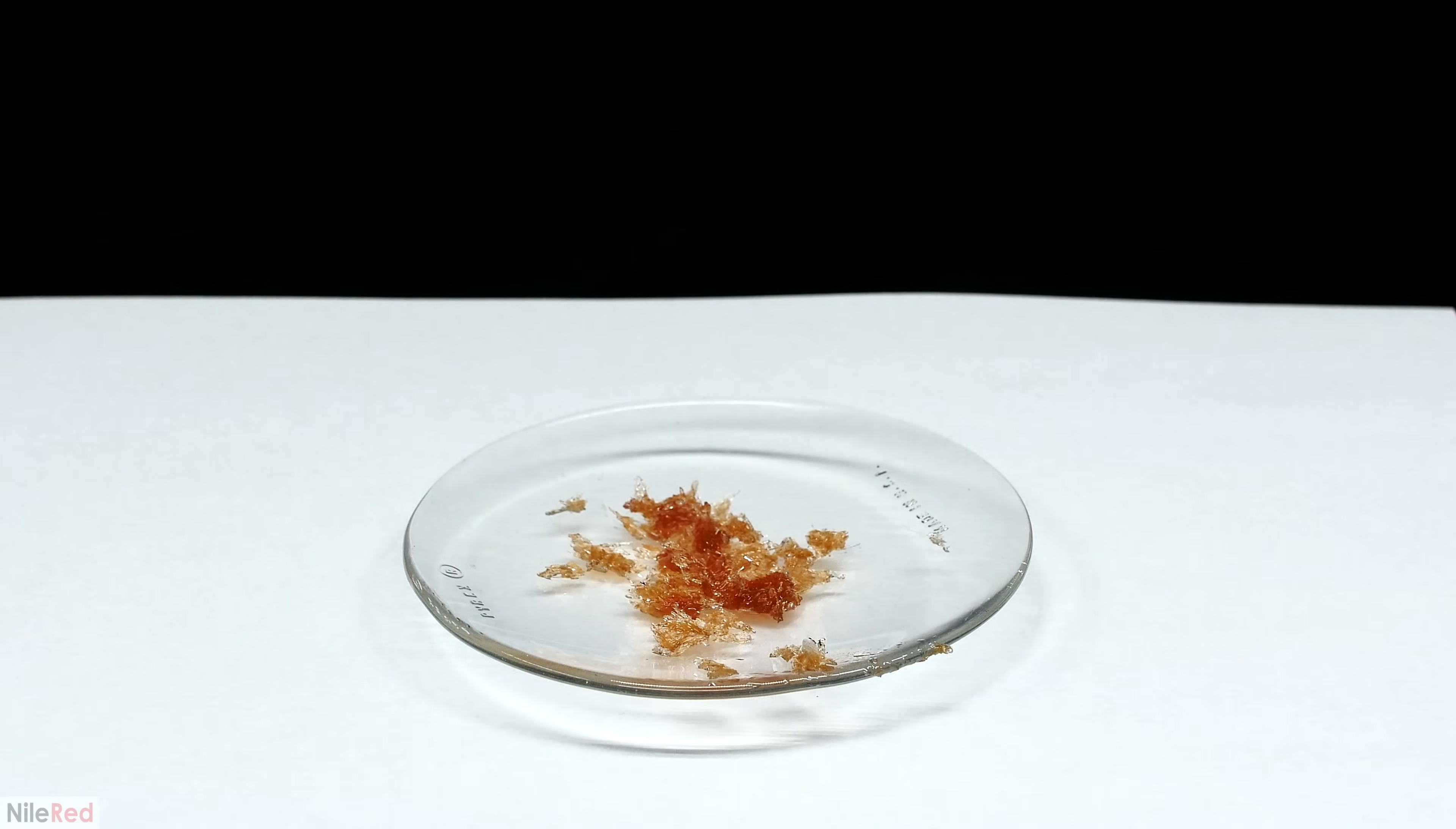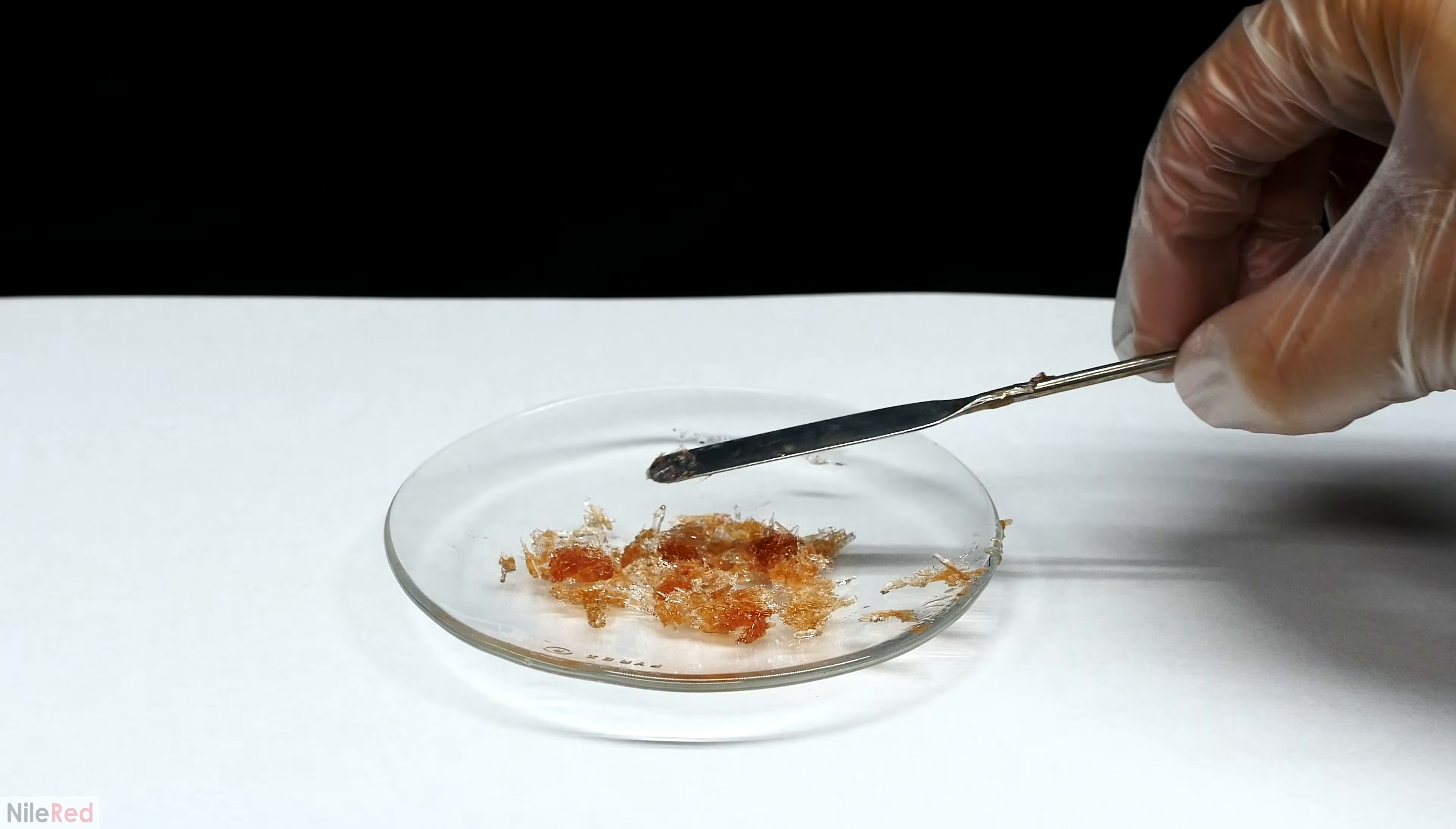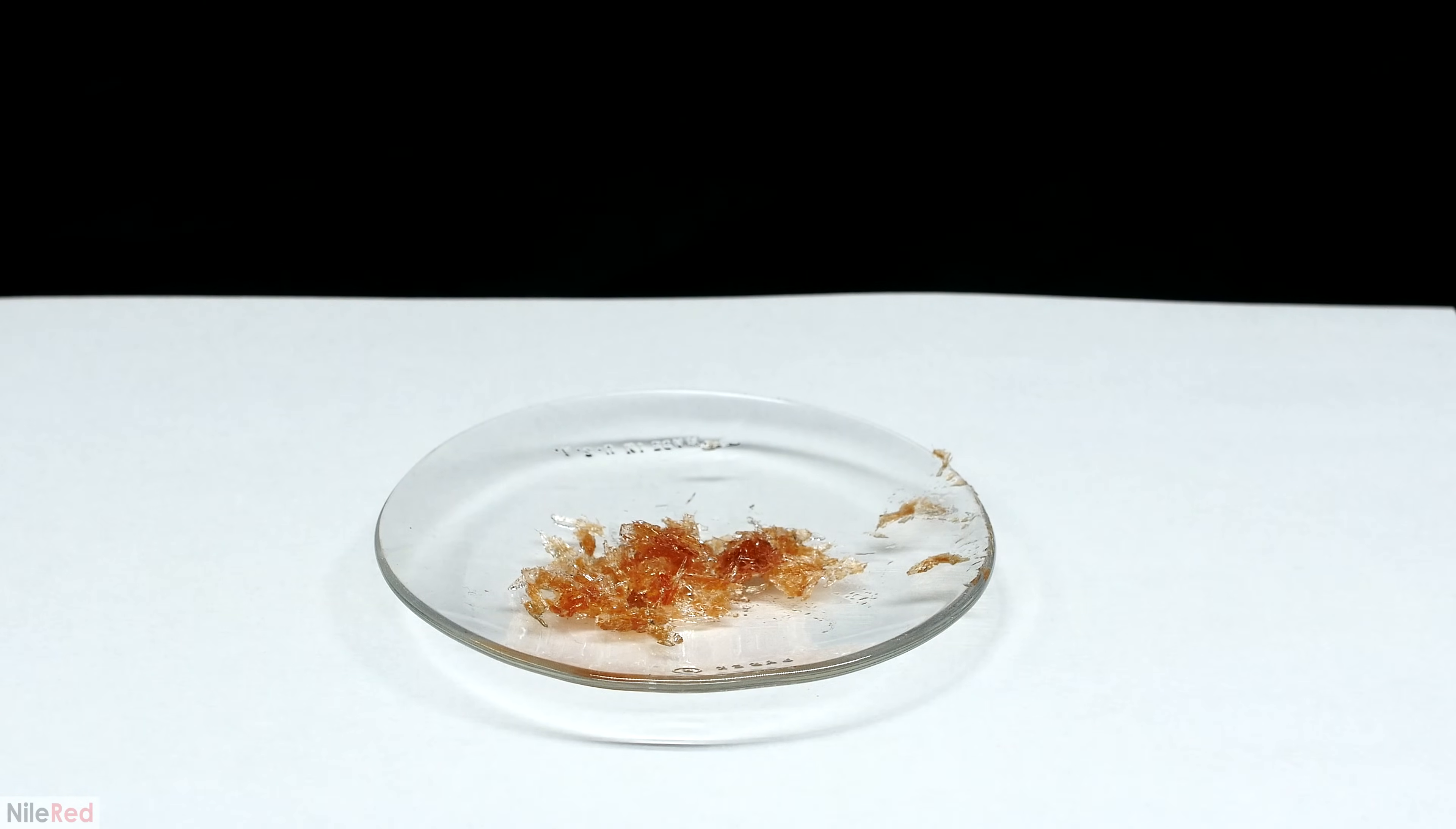Just by the color of the phenol that I have here, it's pretty easy to tell that it's heavily contaminated. The brown color indicates that we have polymerized phenol present, but we're also going to have benzoquinone and other oxidation products.